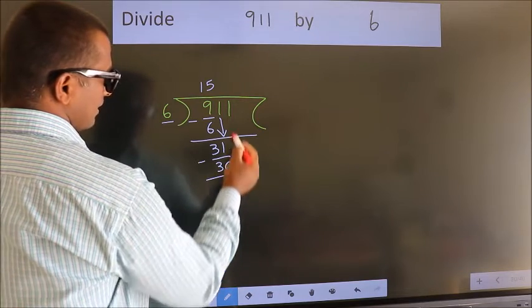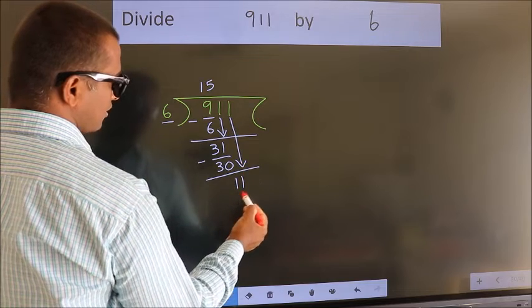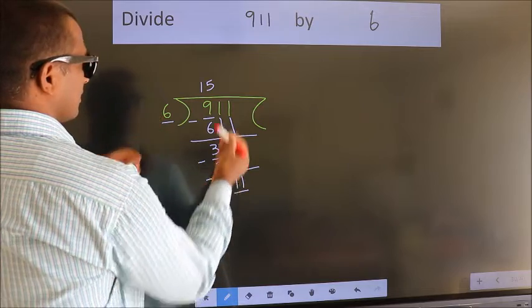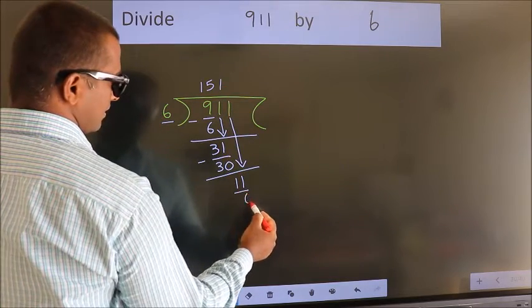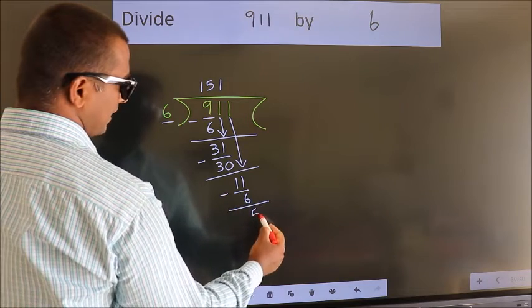After this, bring down the beside number. So, 1 down. So, 11. A number close to 11 in the 6 table is 6 times 1 equals 6. Now we subtract. We get 5.